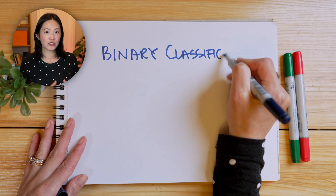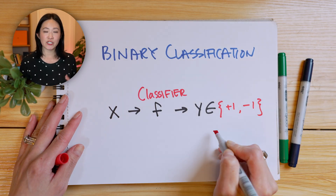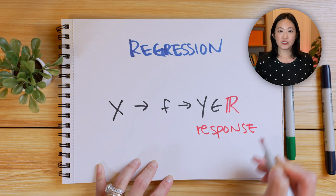Binary classification is when we predict one of two outcomes. For example, a system might determine if a credit card transaction is legitimate or fraudulent based on features like location, amount, and time — it's a classic yes or no prediction. Another type of prediction is called regression, which predicts a continuous value like estimating a housing price based on features such as size, location, and age. Unlike binary classification, the output is a number, not a yes or no.